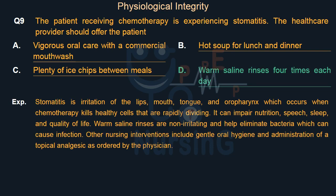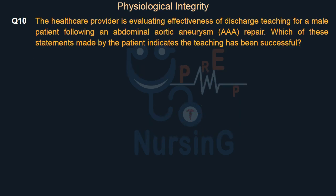Stomatitis is irritation of the lips, mouth, tongue, and oropharynx, which occurs when chemotherapy kills healthy cells that are rapidly dividing. It can impair nutrition, speech, sleep, and quality of life. Warm saline rinses are non-irritating and help eliminate bacteria which can cause infection. Other nursing interventions include gentle oral hygiene and administration of a topical analgesic as ordered by the physician.